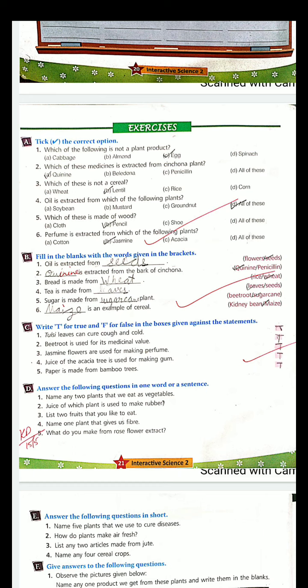Bread is made from wheat. Very good. Bread is not made from rice, it is made from wheat. Tea is made from seed or leaves? Yes, leaves. Tea leaves are there. That's why tea is made from leaves.